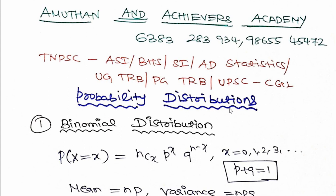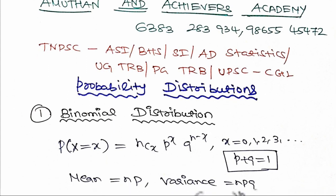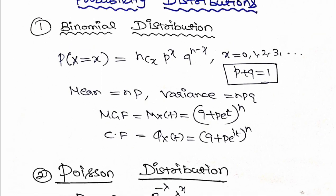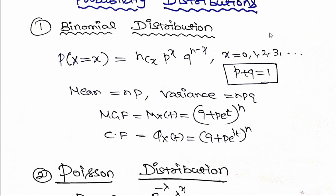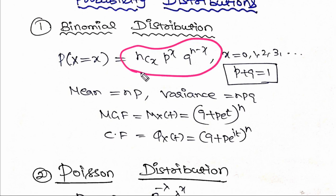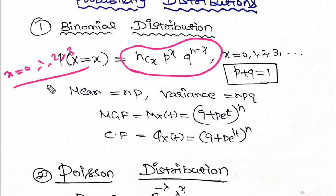The binomial distribution is the distribution of the sum of n independent trials with the probability of success p. The probability mass function is: P(X=x) = nCx · p^x · q^(n-x), where x varies from 0, 1, 2, 3.